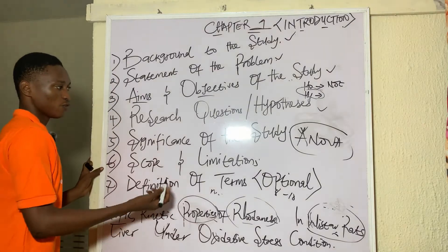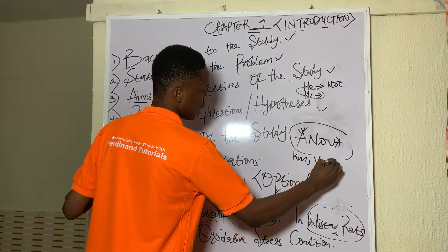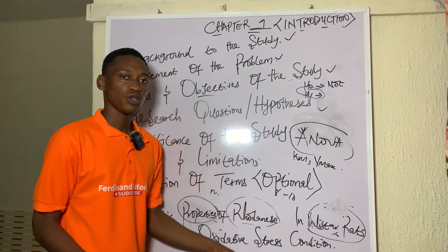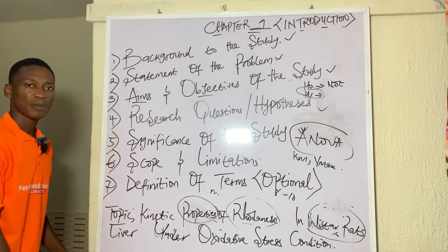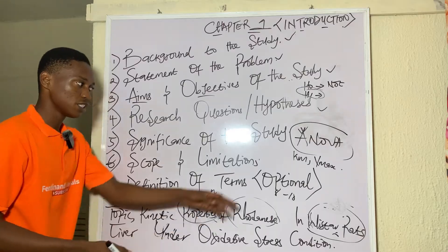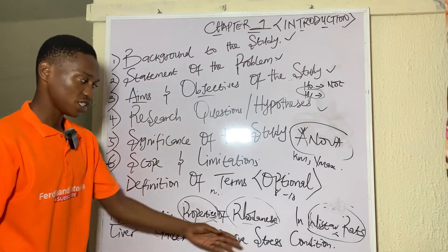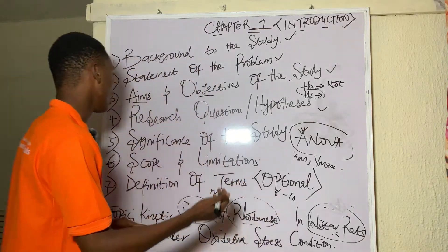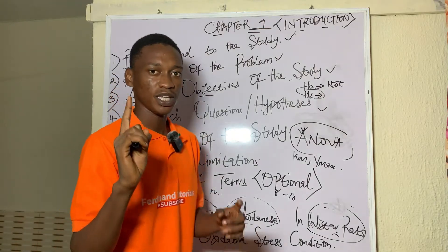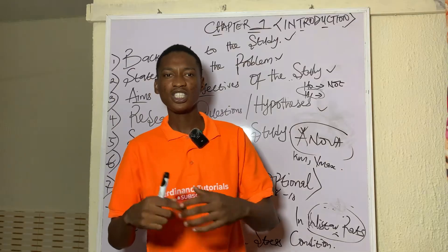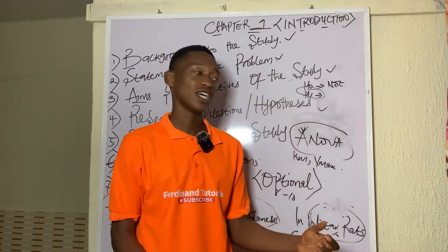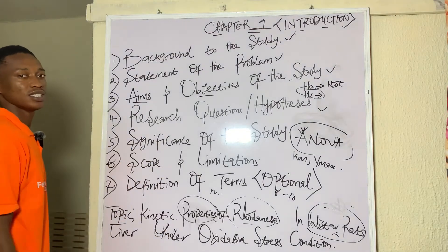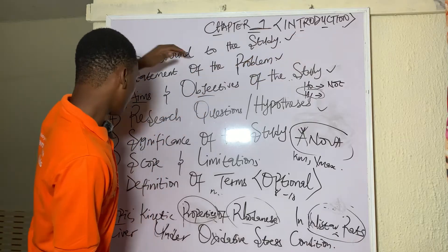Definition of terms is optional. For those who may not know what Km or Vmax mean — unless you are studying biochemistry — Km is the Michaelis constant and Vmax is maximum velocity. Some readers of your research may not have studied biochemistry, so in the definition of terms you explain all ambiguous technical terms: what is Km, what is Vmax, what is oxidative stress, what is rhodanese. The significance of the study is not just for biochemists — it is about usefulness to society — so it helps to define terms a common reader might not understand.